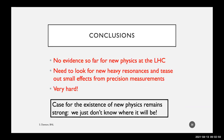In conclusion: there is no evidence for new physics at the LHC, requiring a two-pronged strategy — looking for new heavy resonances and teasing out very small effects from precision measurements. This is a very hard road ahead. The case for the existence of new physics remains strong, but we don't know where it will be found.